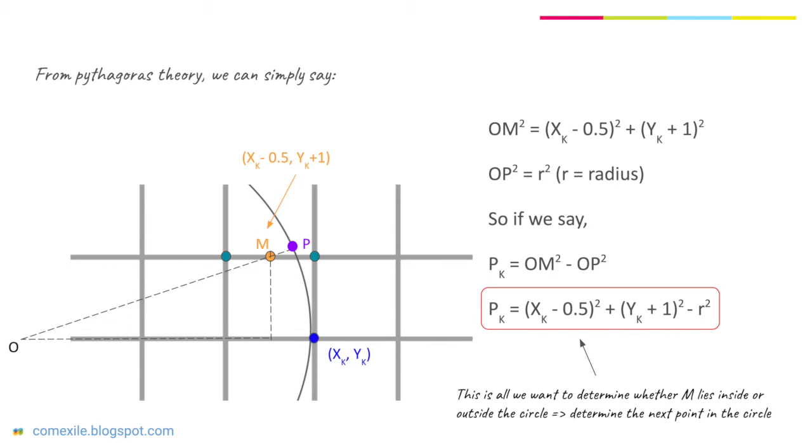And now we have all the variables we need to determine whether M lies inside or outside the circle, which means we have all the variables to determine the next point in the circle.